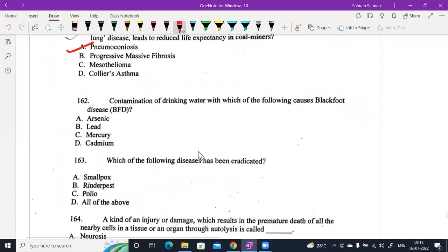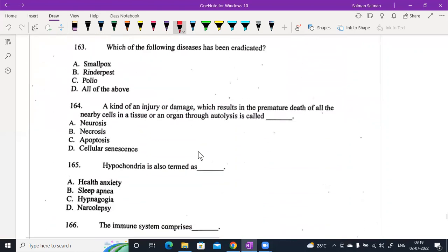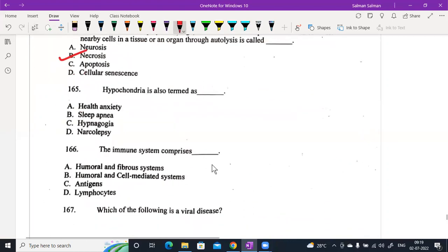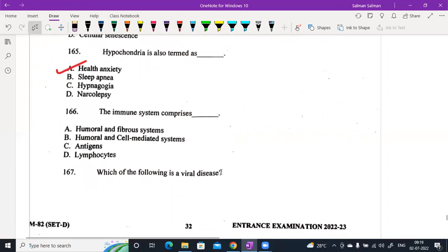Contamination of drinking water with arsenic causes black foot disease, BFD. It is arsenic. Which of the following disease can be eradicated? This answer is all of the above. 164. A kind of injury or damage which results in the premature death of all the nearby cells in the tissue through autolysis is known as necrosis. Hypochondria is also termed as health anxiety.